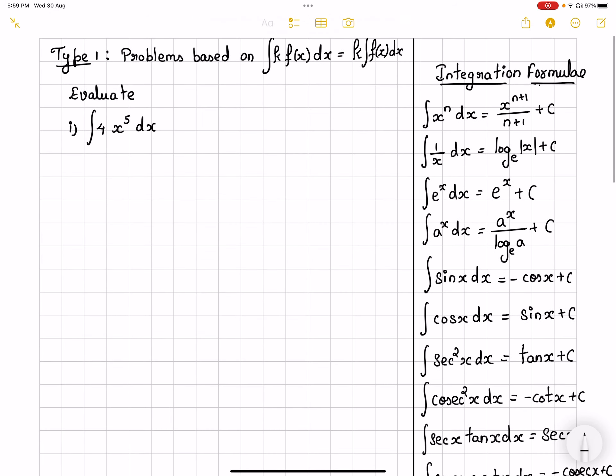It is a Type 1 where the problem is based on integral k f(x) dx where k is going to be a constant. In that case we would be taking out the k and then we would be integrating the integral f(x) dx. So let's look into this.